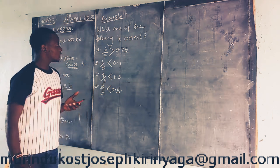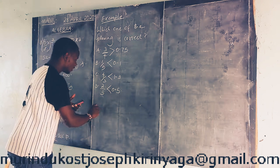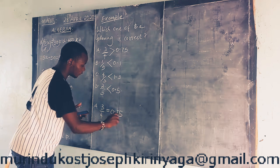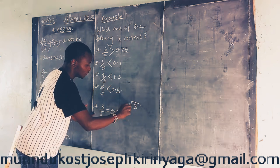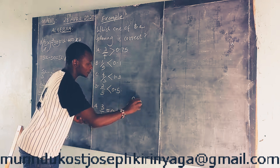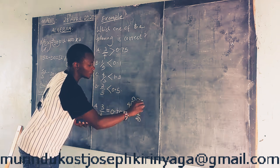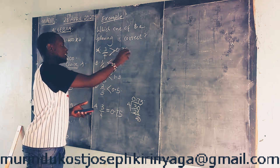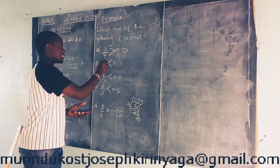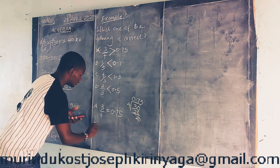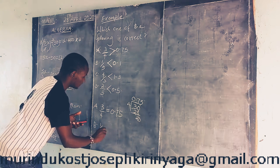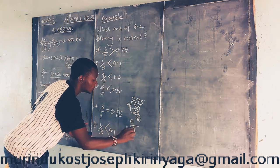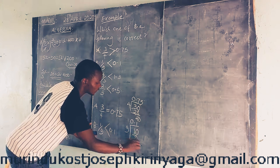3 over 4 written as a decimal should be 0.75, because 3 divided by 4 gives 0.75. So 3 over 4 is equal to 0.75 — it is not greater than, they are equal. So choice A is wrong. For choice B, 1 over 9: if we divide, 9 goes into 1 giving 0.1 with remainder 1, so it is recurring.